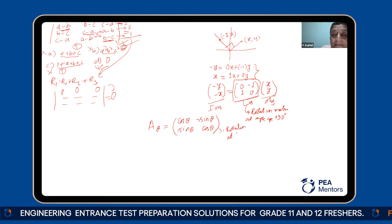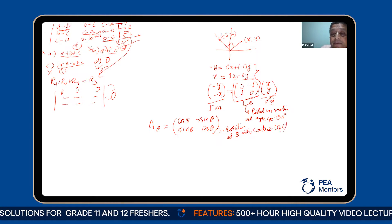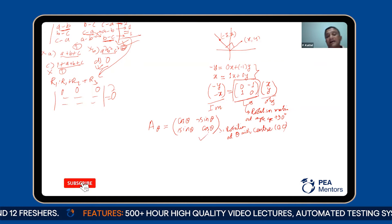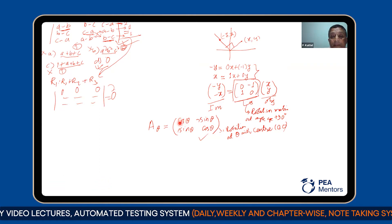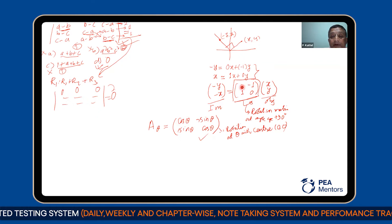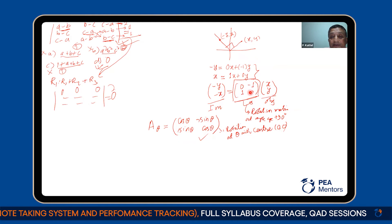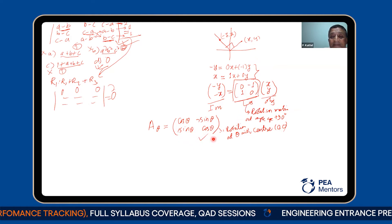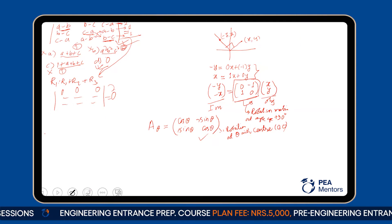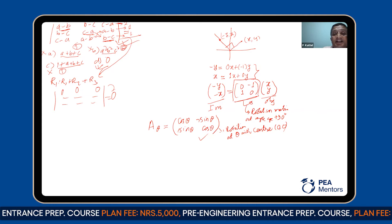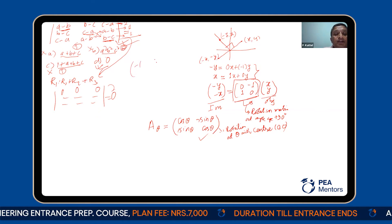What is the rotation at theta with center at origin? If theta is 90 degrees: cos 90° = 0, -sin 90° = -1, sin 90° = 1, cos 90° = 0 — you can see the general matrix gives this. For a half turn of 180 degrees: (x, y) maps to (-x, -y), giving the matrix [-1, 0; 0, -1]. cos 180° = -1, -sin 180° = 0, sin 180° = 0, cos 180° = -1.